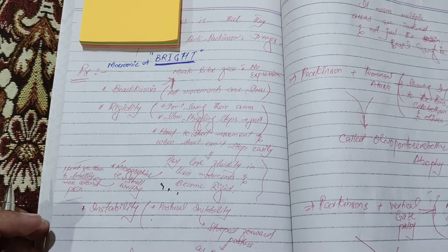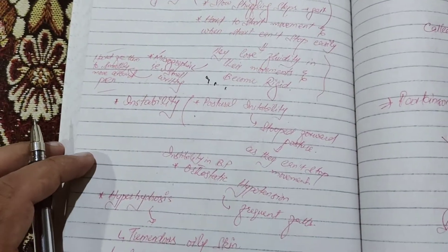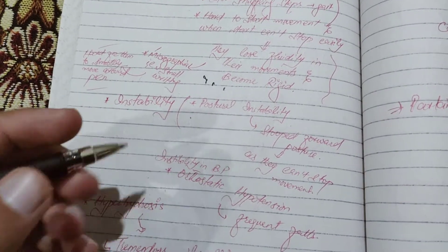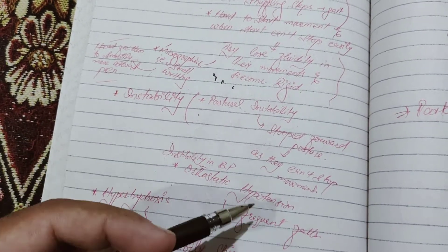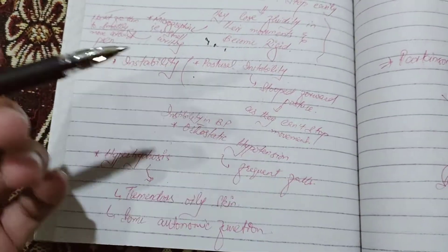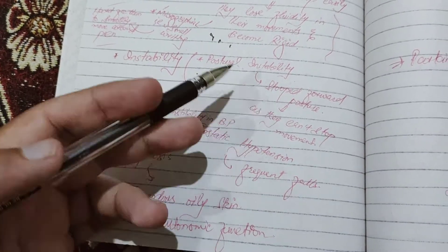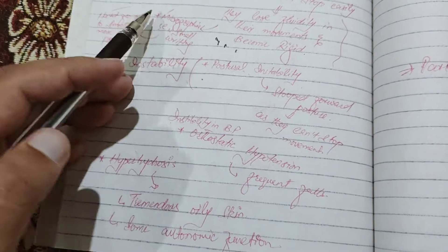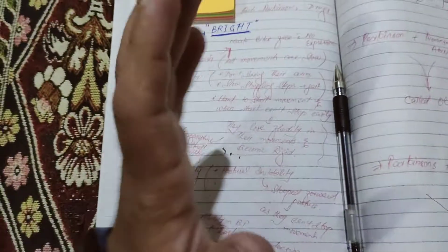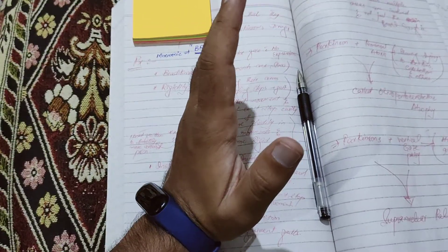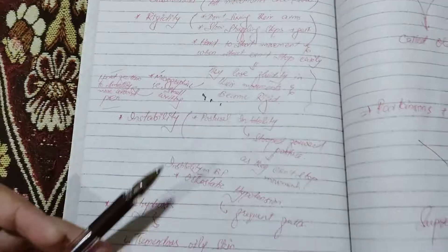The letter I stands for instability, which involves two things: instability in posture and instability in blood pressure. Instability in blood pressure leads to orthostatic hypotension, causing these patients to have frequent falls. Their postural instability is because they can't stop movement once initiated, so these patients usually have a stooped forward posture — they are not moving erect but are stooped forward.